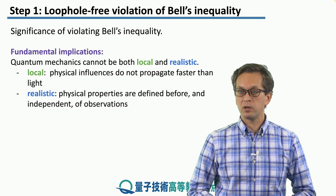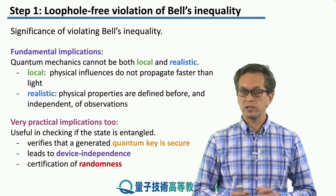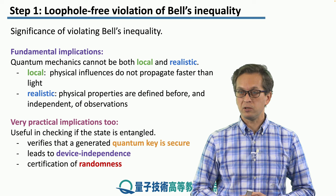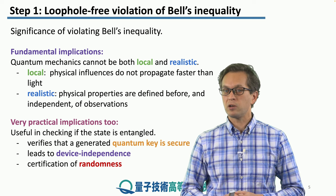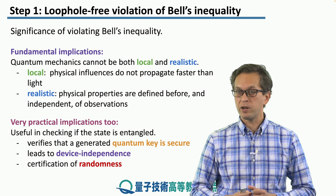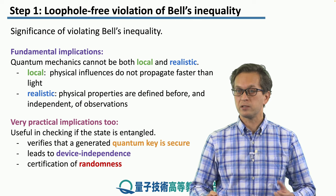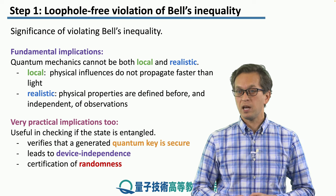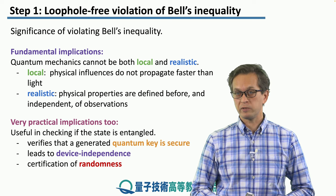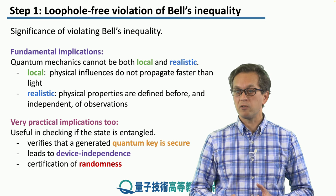Violation of Bell inequality can also be used in very practical terms. It's useful in checking that a state is entangled. It can be used to verify that a generated quantum key is secure. It can also lead to the concept of device independence, where we can test quantum devices to ensure they are operating as instructed. For example, a device could even be manufactured by an eavesdropper during a QKD session, but by using device independence and violation of Bell inequality, we can place an upper bound on how much the eavesdropper can learn. Violation of Bell inequality is also very important in certifying random numbers.